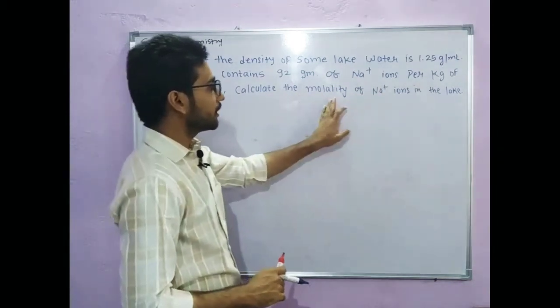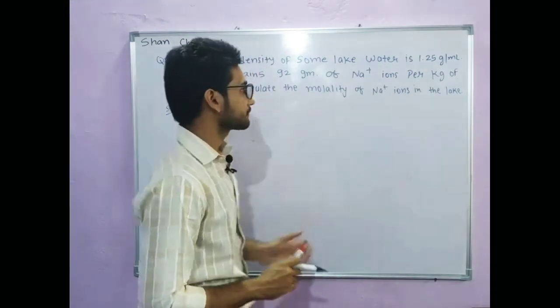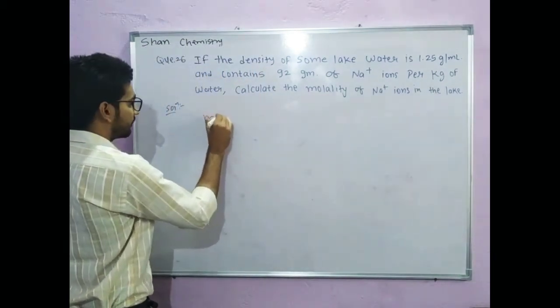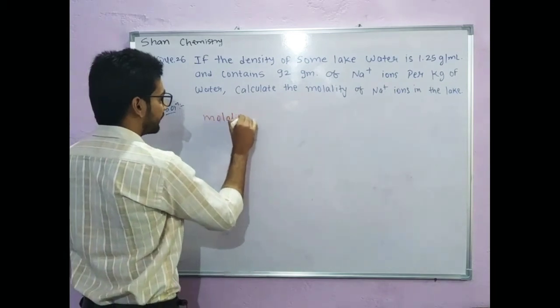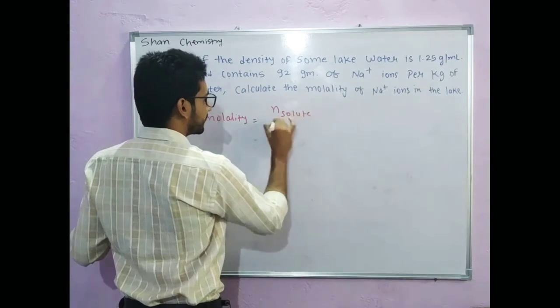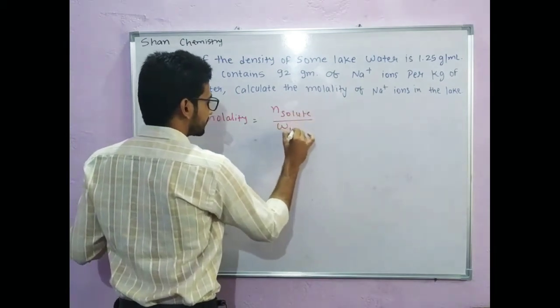Calculate the molality of sodium plus ions in the lake. So students, what do you have to calculate? Molality. Students, molality formula is number of moles of solute which are present in 1 kg solvent.